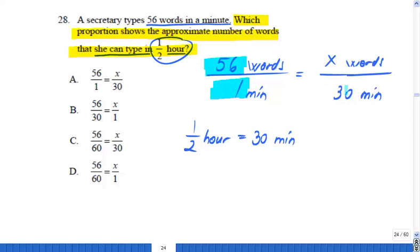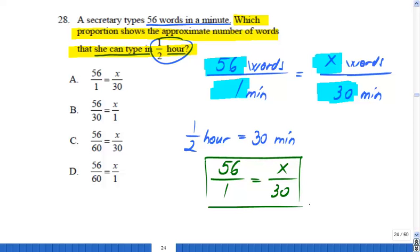I'm looking for a proportion that looks exactly the same with the one that we already have: 56 per one minute should equal how many words per 30 minutes. That's the one that we should look for. What is the answer here? Well, A seems to be exactly the same proportion.